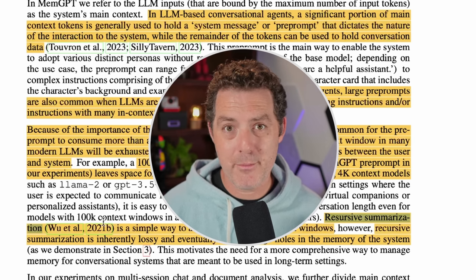They introduce deep memory retrieval (DMR) — when the conversational agent is asked a question that explicitly refers back to a prior conversation with a very narrow expected answer range, like 'Remember that very specific thing I mentioned a month ago?' The performance charts show accuracy of GPT-3.5 alone, GPT-4 alone, and MemGPT. MemGPT's accuracy is really good and better than these models alone. They also look at conversation openers — when the chatbot first greets a user, they want it to be personal and engaging, referencing things mentioned in the past.